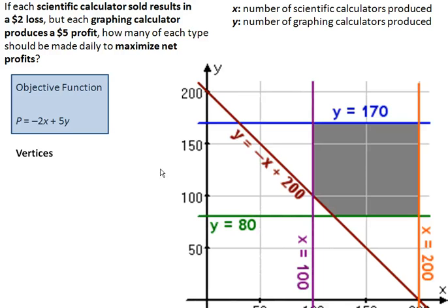All those different inequalities are over here on the right in the graph. You can see those different ones. We've got the Y is between the 170 and the 80. The X is between the 100 and the 200. And then the total with the shipping is that maroon line there.